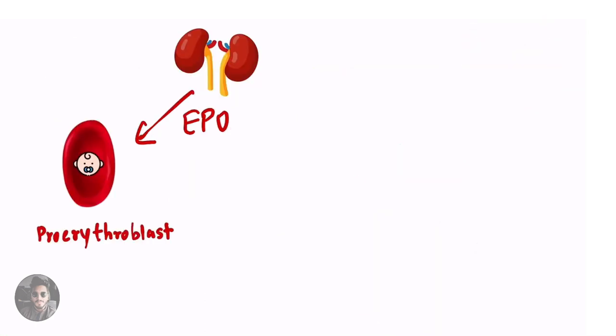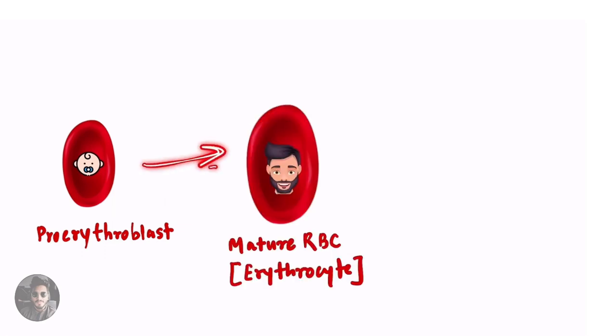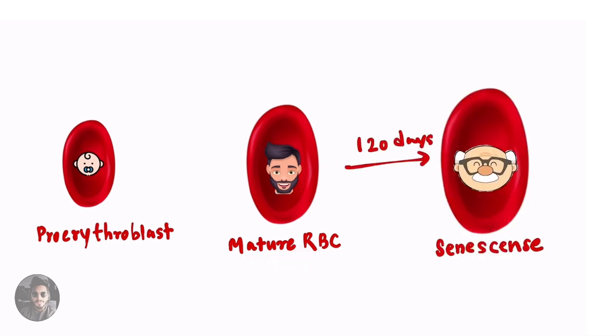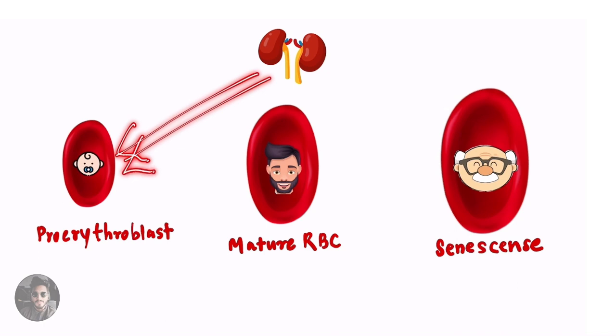This is pro-erythroblast which is an immature form of RBC and it has receptor for EPO. The EPO secreted by the kidney acts on this and converts it into matured RBC, erythrocyte. We know that RBCs have a lifespan of 120 days after which senescence occurs. Hence EPO is constantly secreted by the kidneys so that this cycle continues and the amount of RBCs remain constant in our blood.